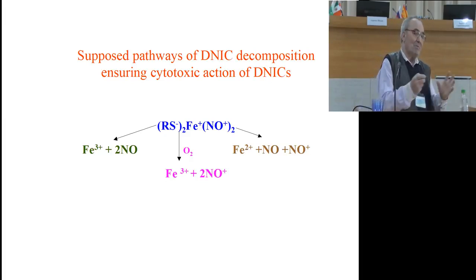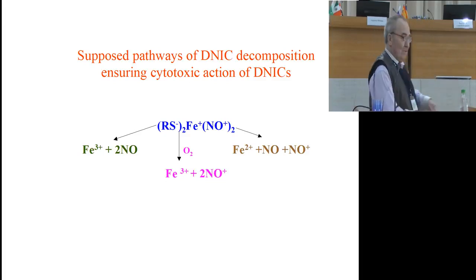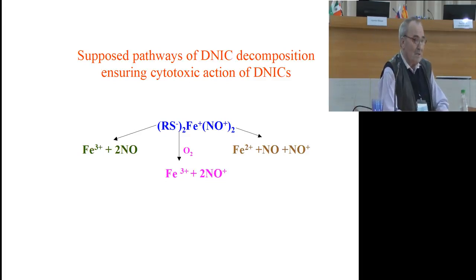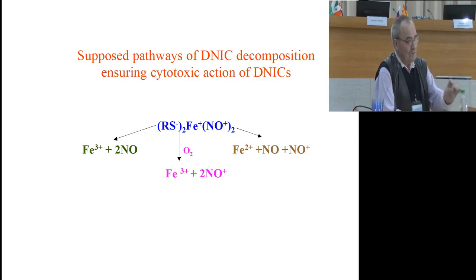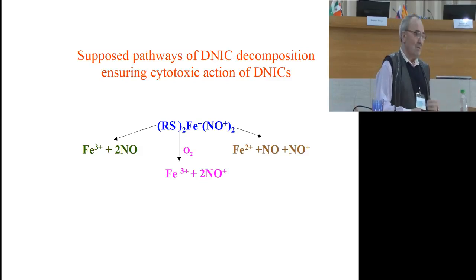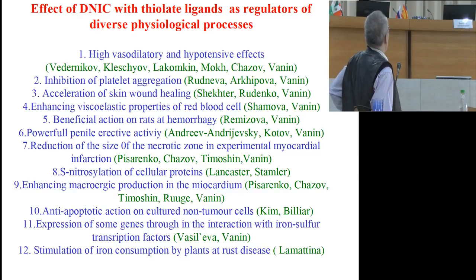Halogen — mentioned by the previous speaker — is also part of this combination. Everything works in combination in nature with the same effect. When NO is produced in large dosages, it forms one of the toxic products — it kills target cells. Immunity works through this, and peroxynitrite is formed through the combination of NO and active forms of oxygen such as superoxide.